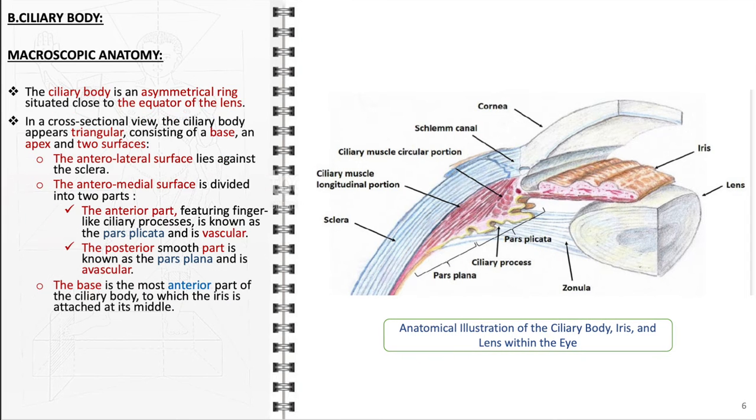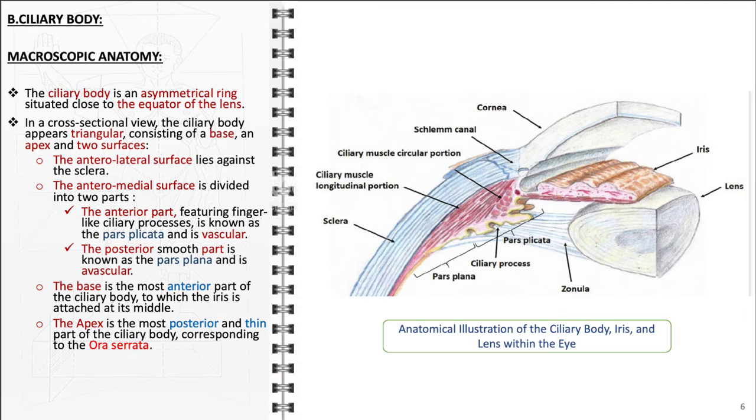The base of the ciliary body is its most anterior segment, where the iris attaches centrally. Conversely, the apex is the most posterior and slender part of the ciliary body, aligning with the ora serrata, the junction between the light-sensitive retina and the ciliary body.